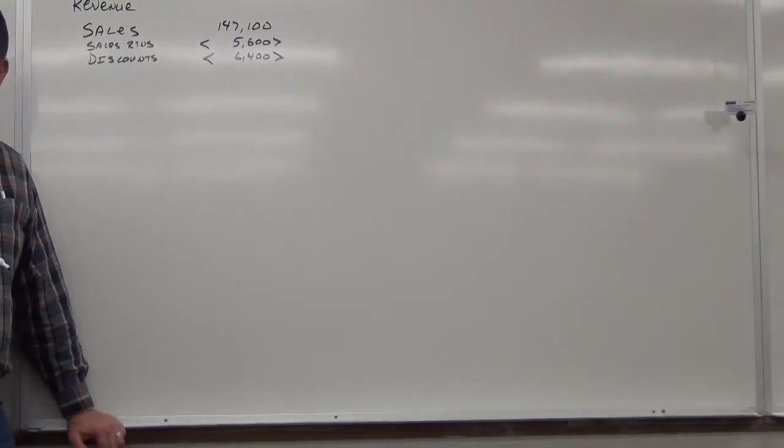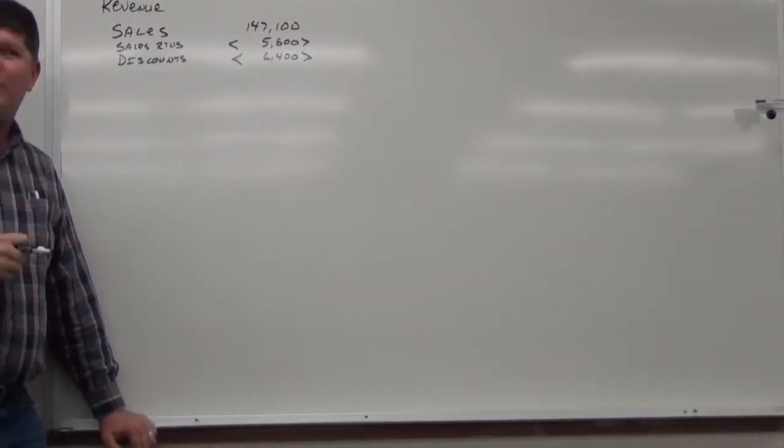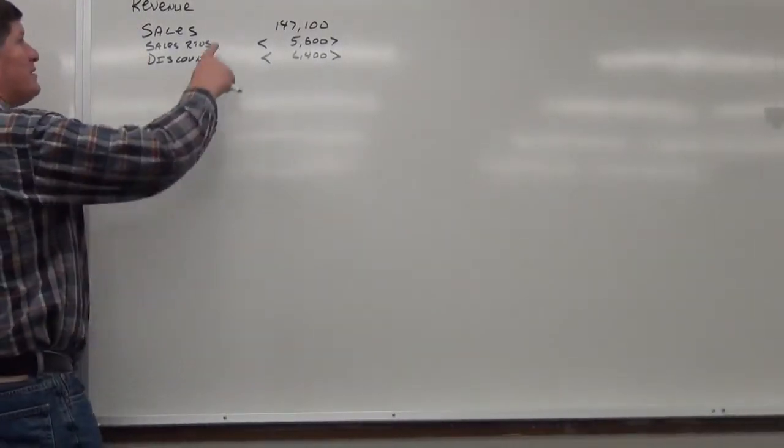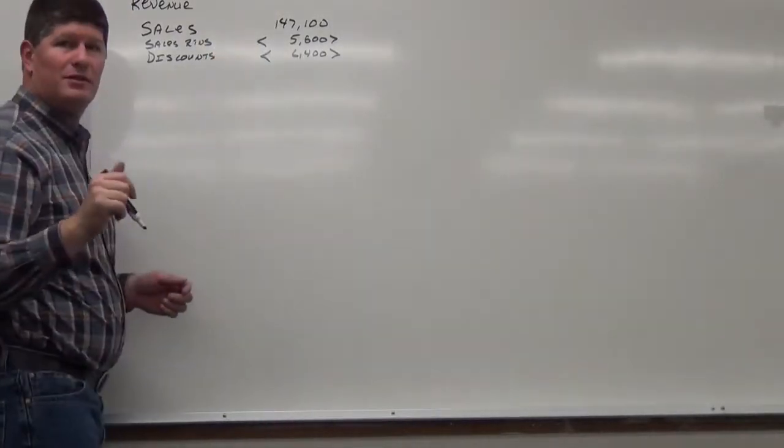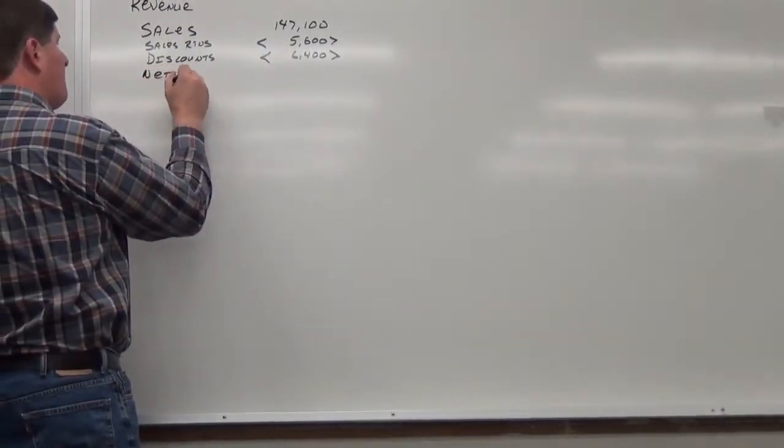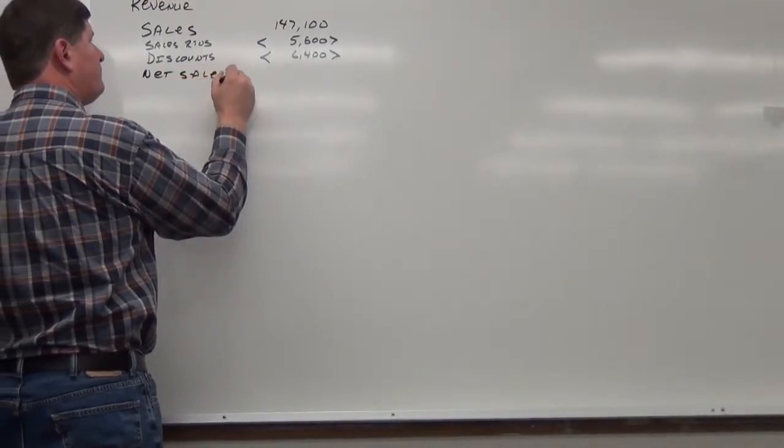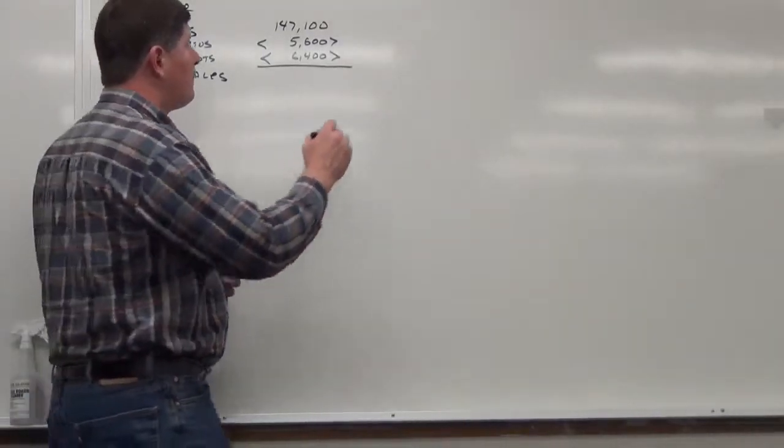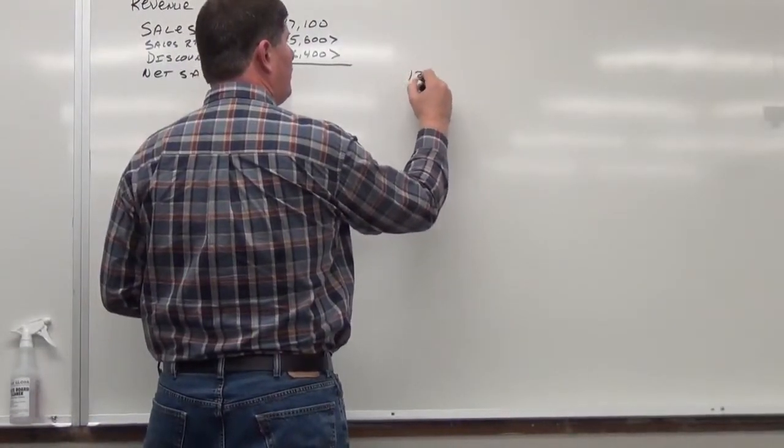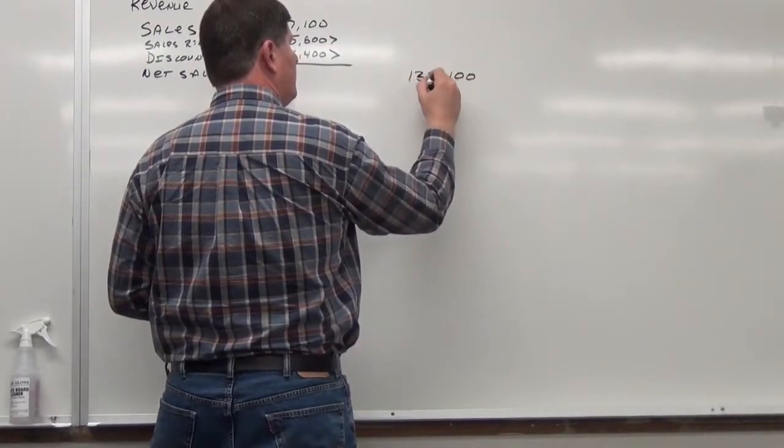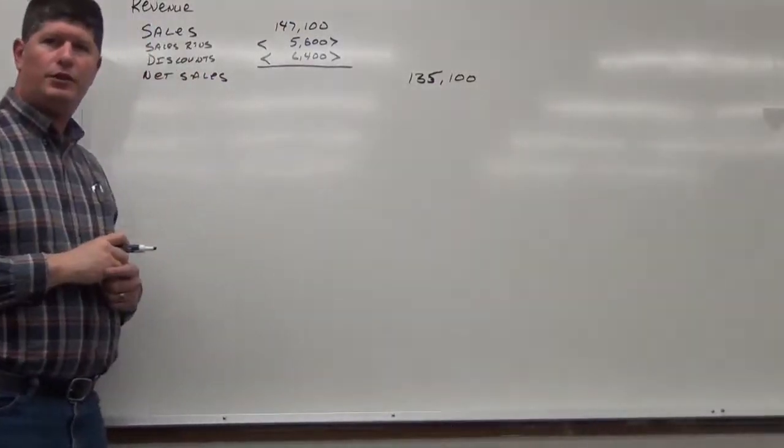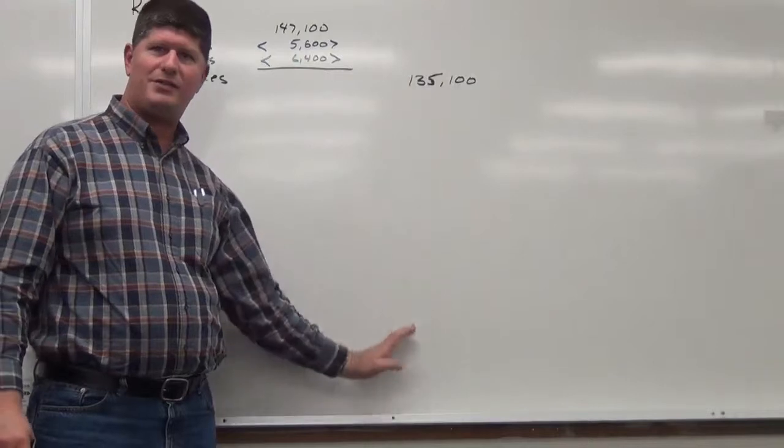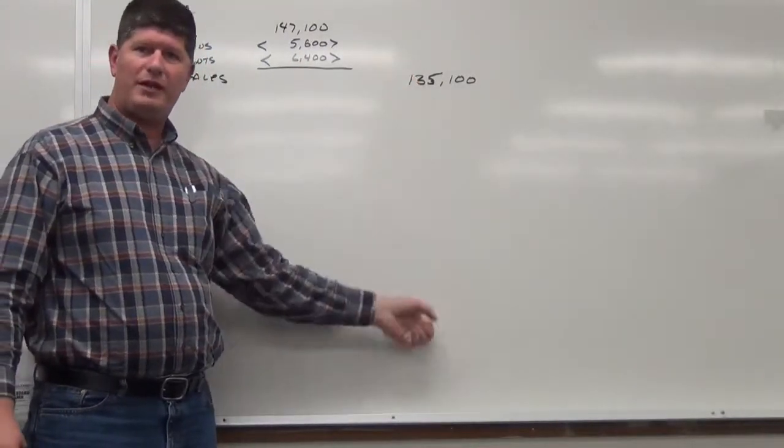Sales returns and allowances. Okay. So, we've got sales returns. How much is that? $5,600. $5,600. What else do we have? Sales discounts. Discounts. How much is that? $6,400. I feel like I did this last week. Did we do this problem last week? No. Okay. I'm having a moment there. Okay. What's next?